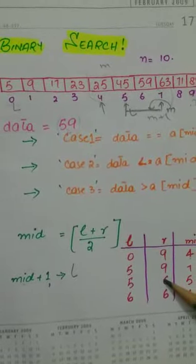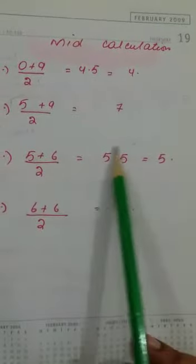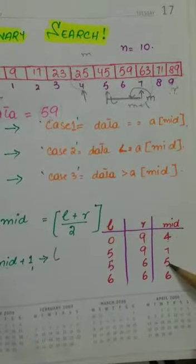That is 6. Now we have to do our calculation. 5 plus 6 divided by 2 equals 5.5. When we do float value in the integer, our result is 5.